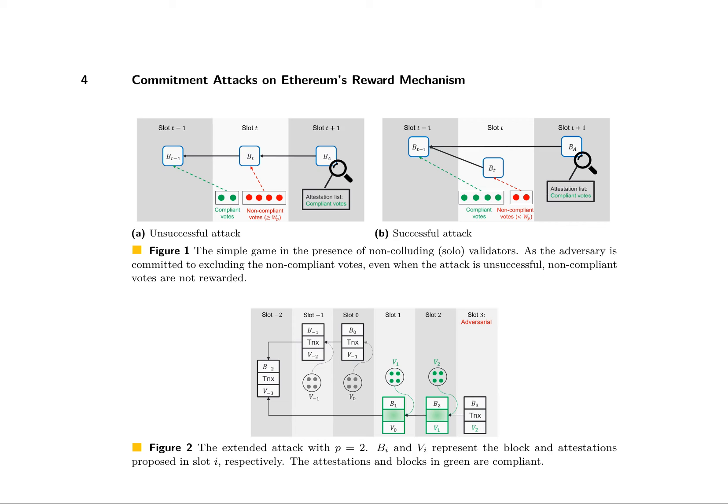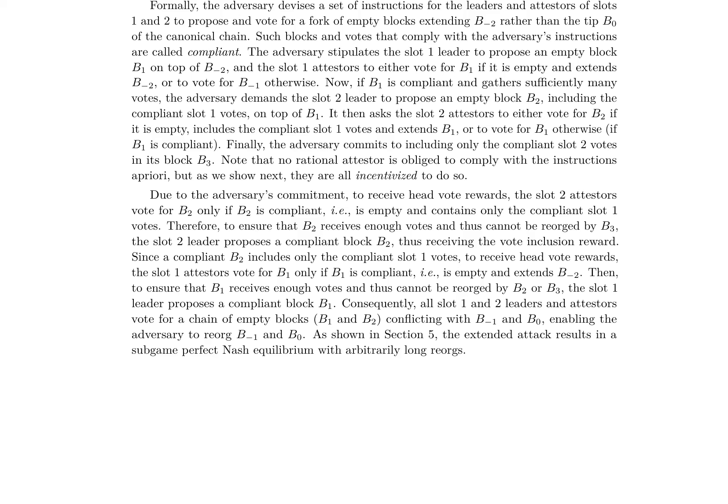The attacks involve manipulating the reward system for timely votes, coercing voters from previous slots into supporting conflicting blocks at no cost to the adversary. To address these vulnerabilities, the authors propose a novel reward mechanism to restore the voter's role as a check against proposer power, making it fairer and more decentralized. This mitigation is practical for implementation in Ethereum and addresses the identified vulnerabilities in LMD Ghost.